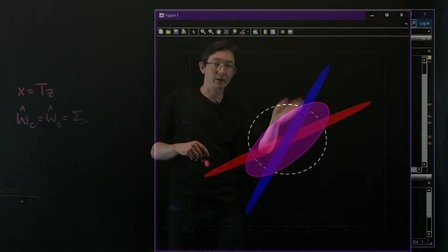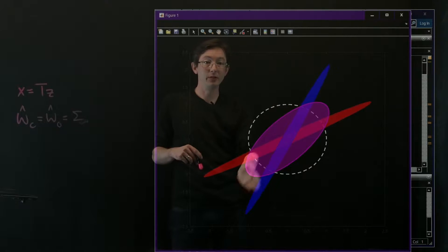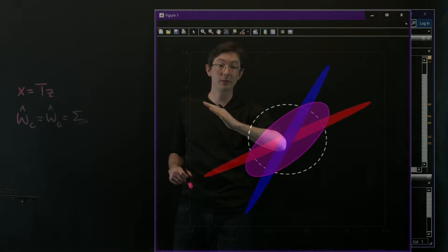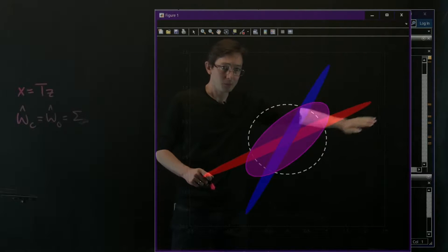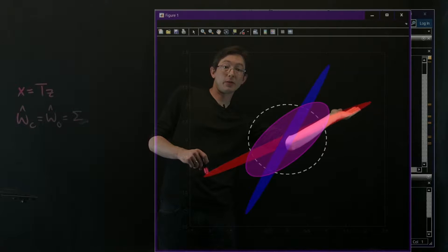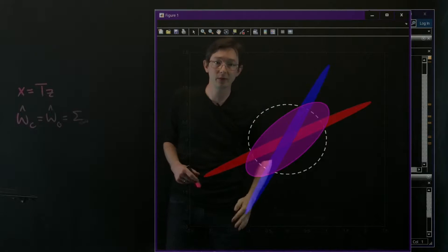We have our observability Gramian for our original system in blue here, so there's this really observable direction, and this one's not as observable. I have my red controllability Gramian, so this direction is super controllable, this direction is barely controllable.